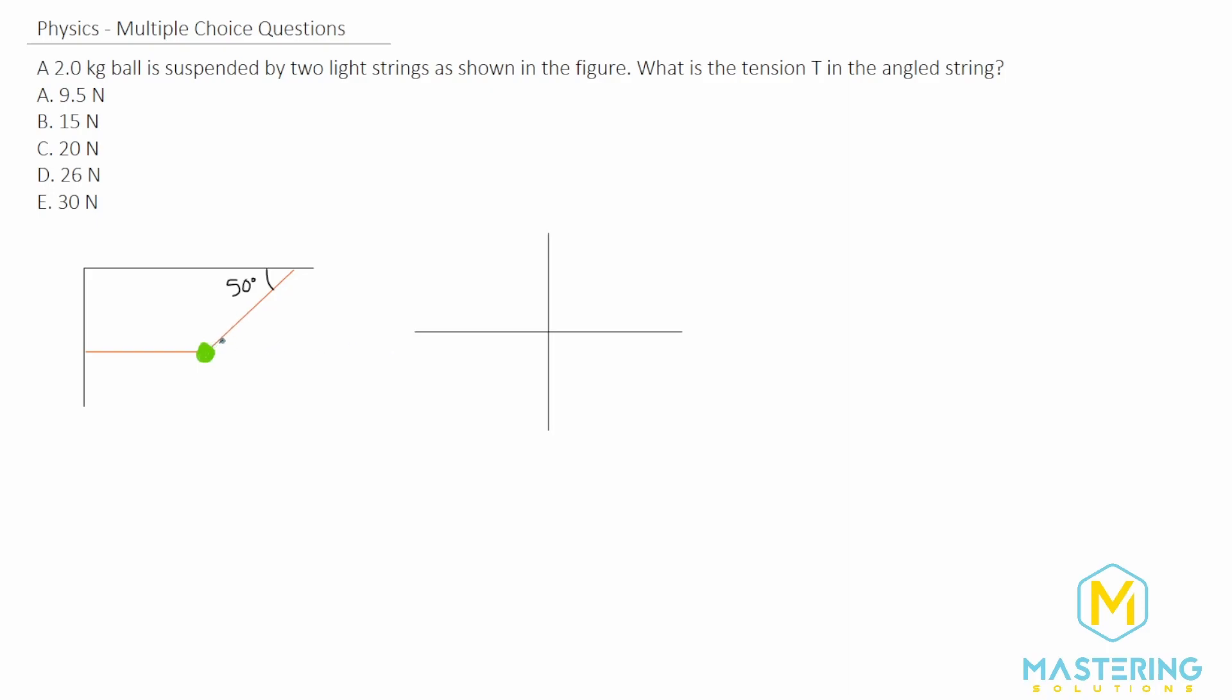When we draw the free body diagram, we have tension here, weight going straight down, and tension from the other string coming this way. We need to figure out the tension in this angled string.